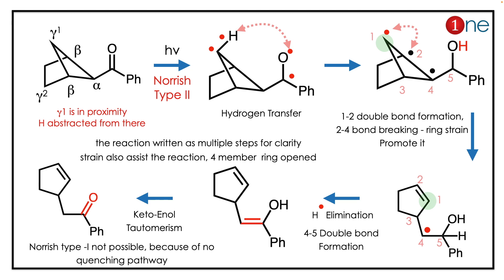Basically, it's a gamma hydrogen transfer. The gamma hydrogen near to the carbonyl will always transfer. So gamma hydrogen transfer occurs, giving a transient state which is an alcohol, and then you have a radical formed.